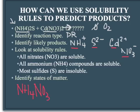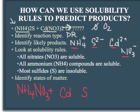Our other compound would be cadmium, which is 2+, and sulfide, which is 2−. The charges balance there as well, so we can write this as a compound. So we've got ammonium nitrate and cadmium sulfide as the likely products.